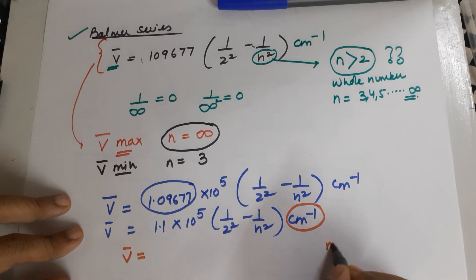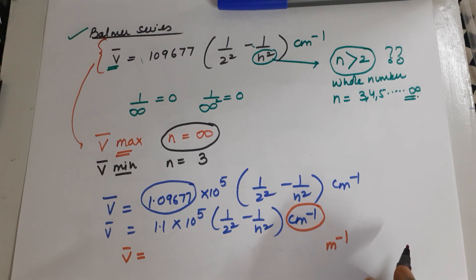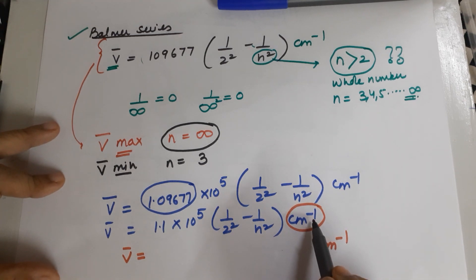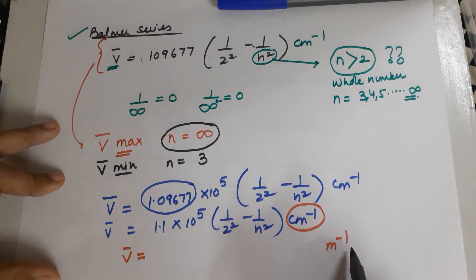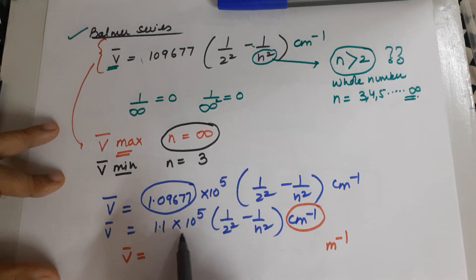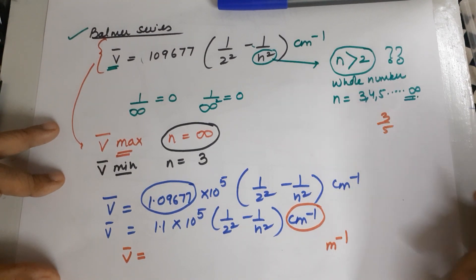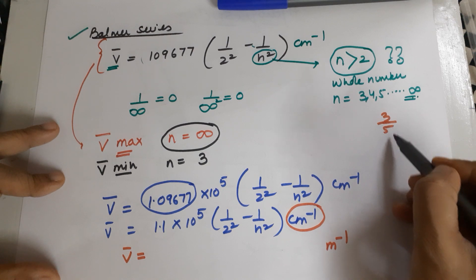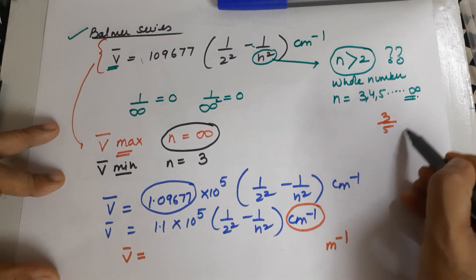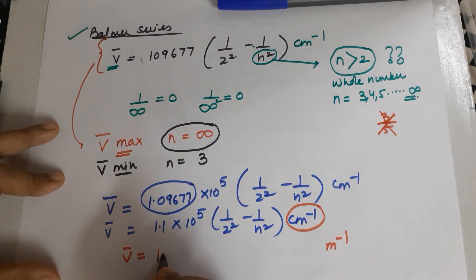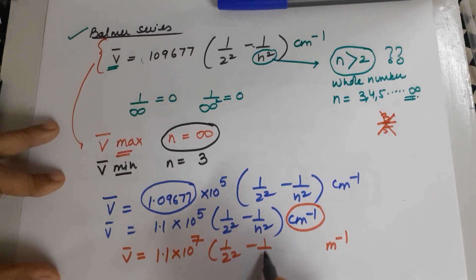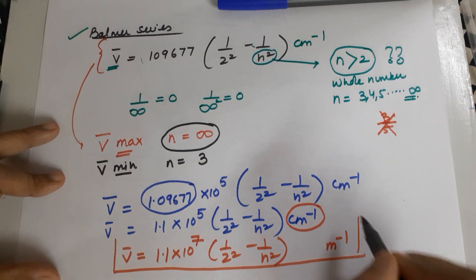To convert from cm⁻¹ to m⁻¹: since cm⁻¹ means centimeter is in the denominator, dividing by 100 in the denominator is actually multiplying by 100, which means the constant moves from 10⁵ to 10⁷. So the formula becomes V̄ = 1.1 × 10⁷ × (1/2² − 1/n²) in meter inverse. This is the formula you use for Balmer series numericals.